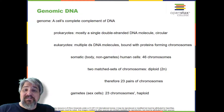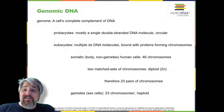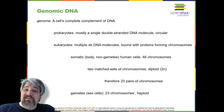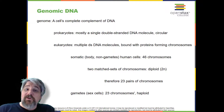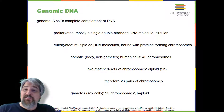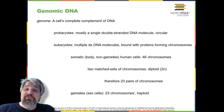In eukaryotes, the genome comprises several double-stranded linear DNA molecules bound with proteins to form complexes called chromosomes. Each species of eukaryote has a characteristic number of chromosomes in the nuclei of its cells. Human body cells — also known as somatic cells or non-sex cells — have 46 chromosomes. A somatic cell contains two matched sets of chromosomes, a configuration known as diploid. The letter N is used to represent a single set of chromosomes; therefore a diploid organism is designated 2N.